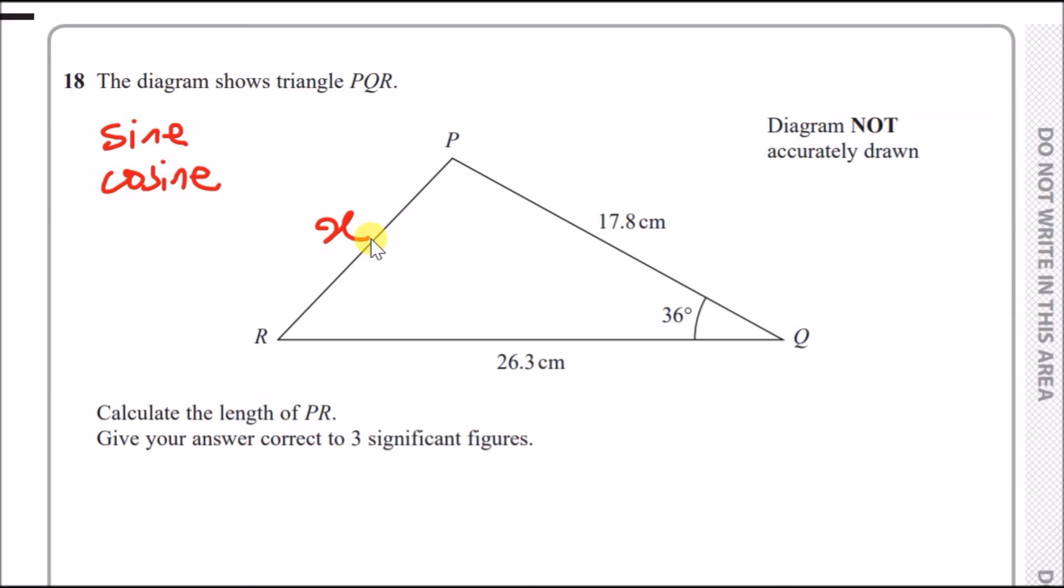Now, which one do we use? Well, we always try the sine rule first. And the sine rule tells us that we need a matching pair of length to its opposite angle. So length to angle. In this case, we've only got X and its opposite pair, 36 degrees. However, we don't have another pair of angle. Because if we had two angles at least and two lengths, then we can do it. But we can't. So in this case, we cannot use sine rule. However, we can use cosine rule. Because the cosine rule tells us that we need three lengths and an angle. And we've got it.